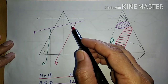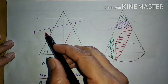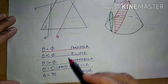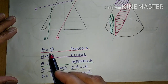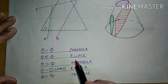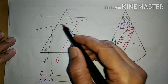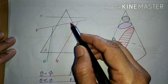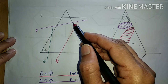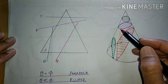If this cutting plane line is passed at a particular angle where theta of the cutting plane line is less than phi — the angle of the extreme generator — then it will cut both the extreme generators. If it cuts both the extreme generators, it will form a curvature on both sides, so we will get an ellipse.